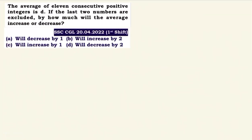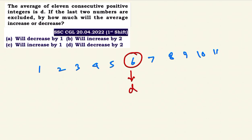The average of 11 consecutive positive integers is D. If the last two numbers are excluded, by how much will the average decrease or increase? The average of 11 consecutive positive integers — D is the middle number. If the last two numbers are excluded, 9 numbers remain: 1, 2, 3, 4, 5, 6, 7, 8, 9.